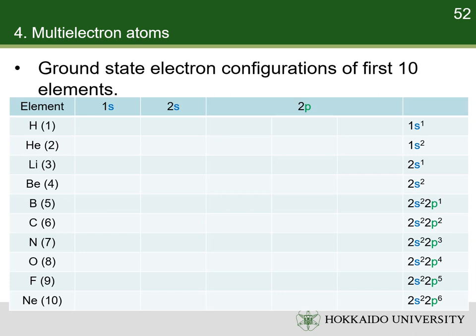The ground state electron configurations of the first 10 elements are shown in the table. The 1s orbital has the lowest energy, so it is occupied in hydrogen. In helium, the second electron also occupies the 1s orbital but must have a different spin from the first, according to the Pauli exclusion principle. In lithium, the third electron occupies the 2s orbital, because the 1s orbital is full and the 2s orbital has the lowest energy among the empty orbitals. In boron, the fifth electron occupies one of the 2p orbitals. In carbon, the sixth electron occupies another 2p orbital and has the same spin as the fifth electron, according to Hund's rule. In nitrogen, the seventh electron occupies the remaining 2p orbital and has the same spin as the fifth and sixth electrons.